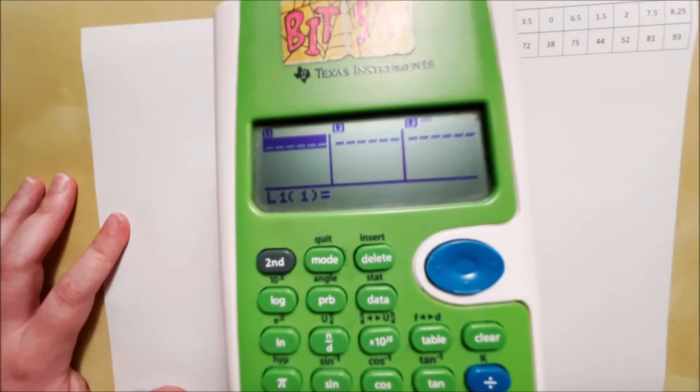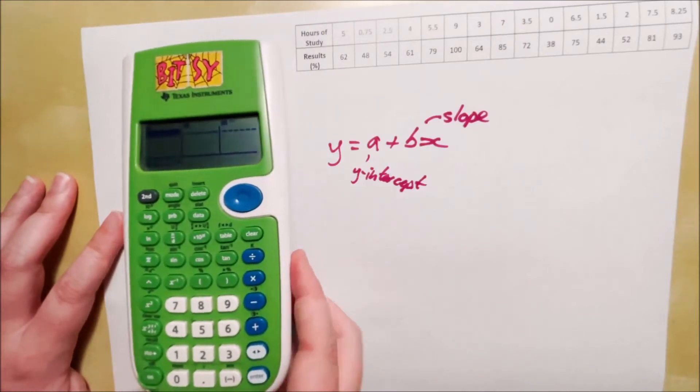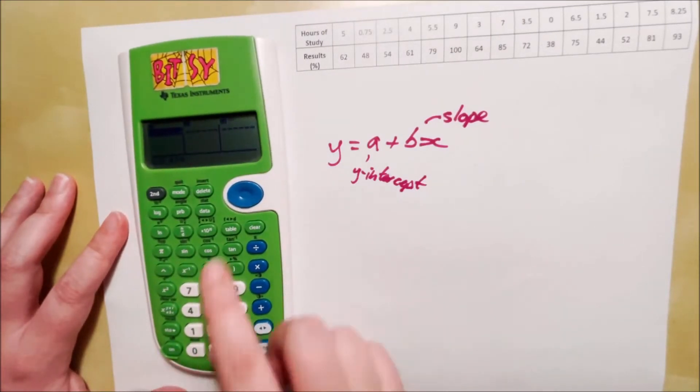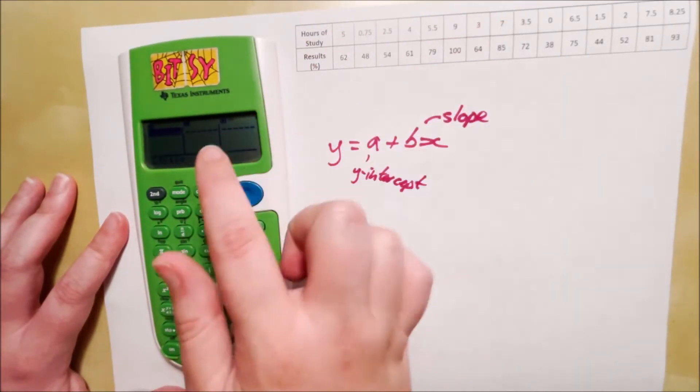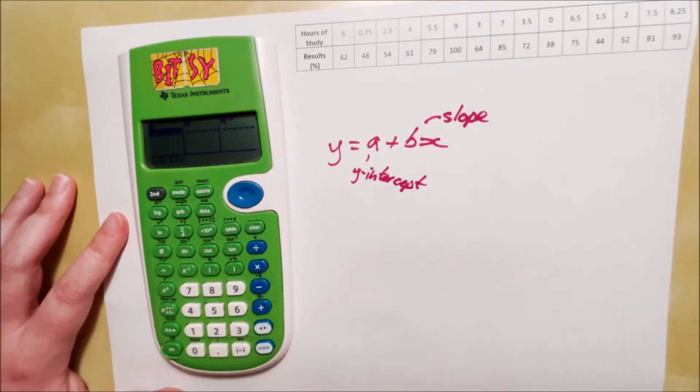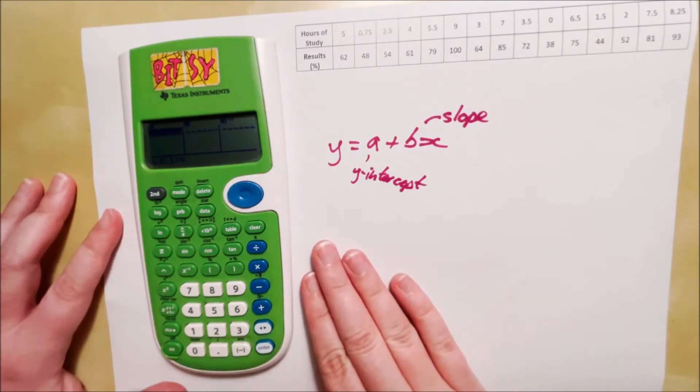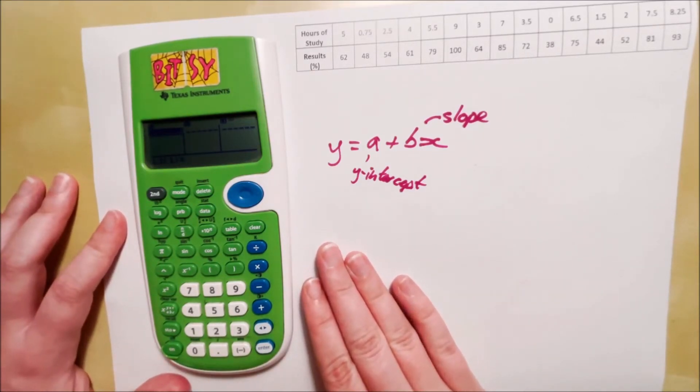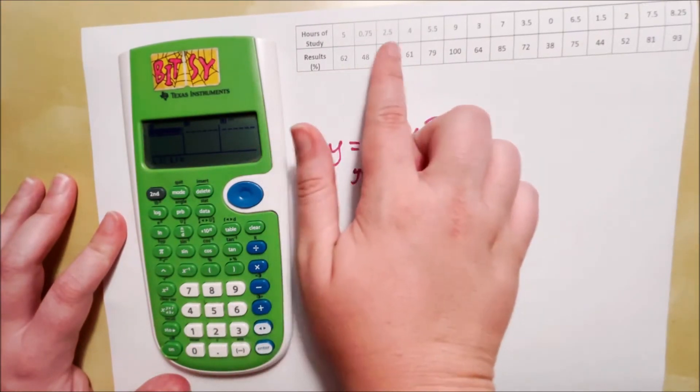We only need two of those, L1 and L2. Now, in the first column, L1 is where you should put your explanatory variable, and L2 is where you'll put your response variable. Okay, if you accidentally put them the wrong way around, you can fix it later, but it's just good practice to do it that way.